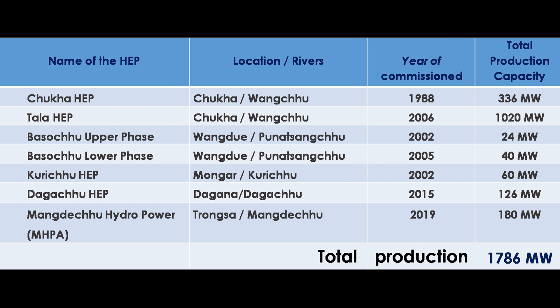Kurichu is in Mongar on the Kurichu River, commissioned in 2002 with a generating capacity of 60 megawatts. Dagachu power plant in Dagana on the Dagachu River was commissioned in 2015 with a generating capacity of 126 megawatts.